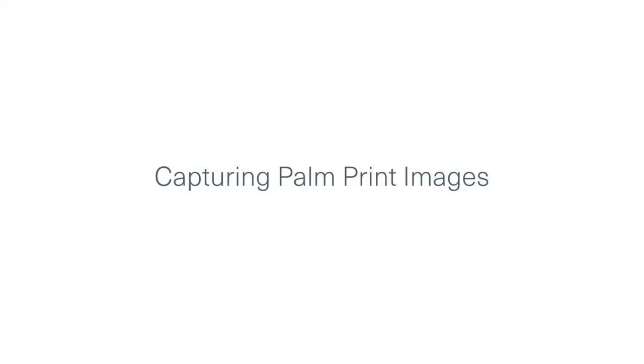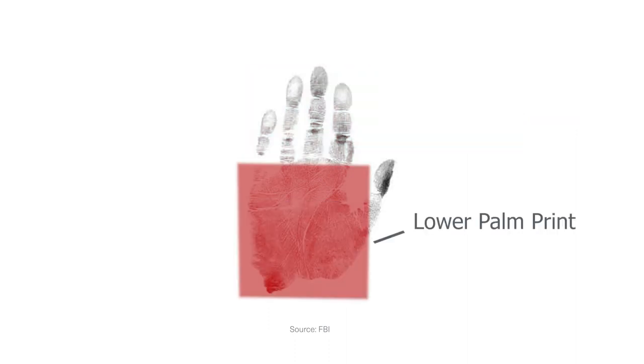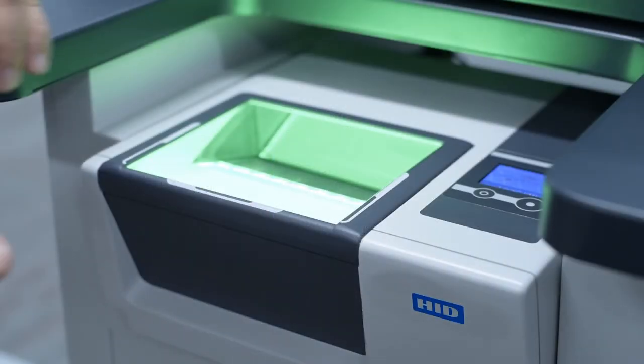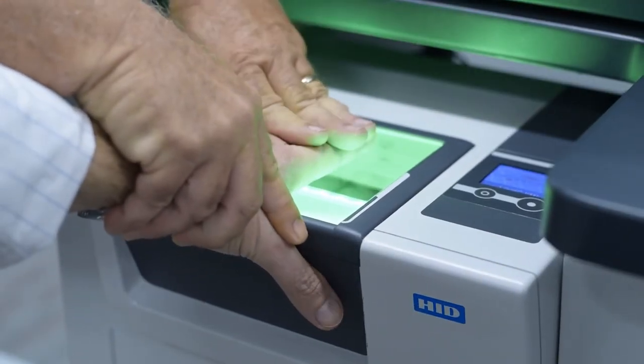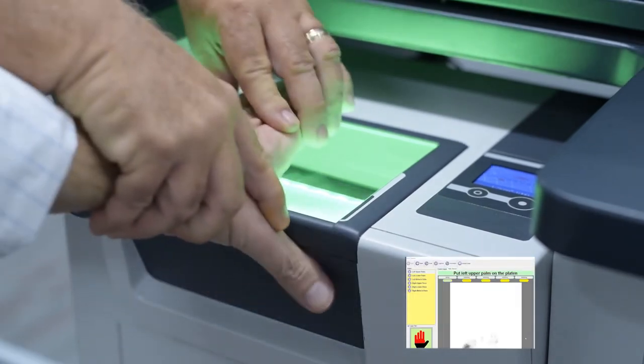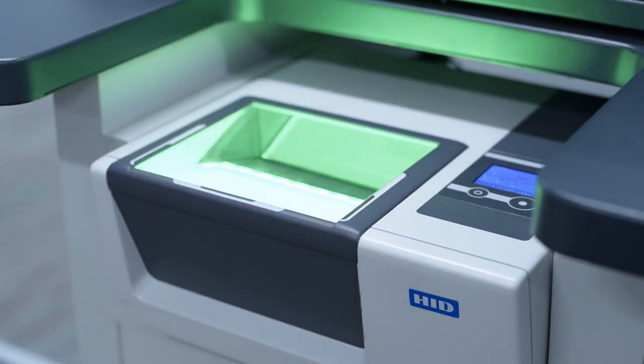Palm images are only captured on the L-scan device. When capturing palm print images on the L-scan, the procedure is to separately capture the upper, lower, and writer's palm images in that order. When capturing the upper palm, notice how the operator grasps the subject's hand and uses their fingers to push the subject's thumb down and perpendicular to the fingers as they guide the hand to the platen surface.